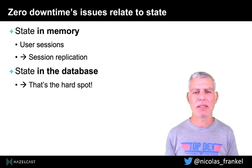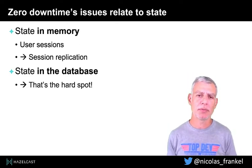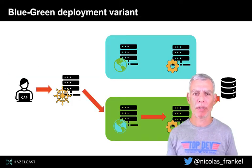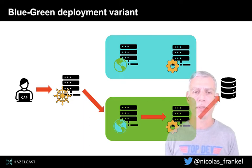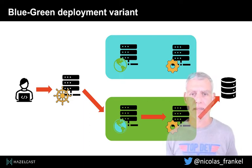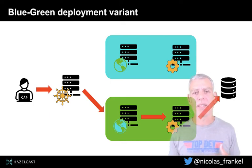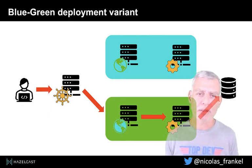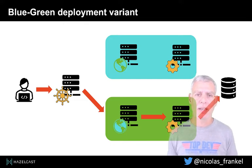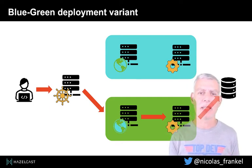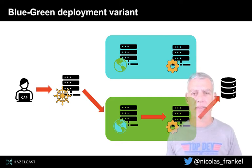But the problem is the database. In the previous diagram, I showed two different databases. The problem is when you have two different databases, you probably need at some point to migrate your data. If you've got a couple of lines of data to migrate, that's fine. But if you've got millions of lines of data to migrate, that's not so fine. So in general you go to a variant with a single database. I will go through both options — single database and different database — and show you that you probably want to go for option two.